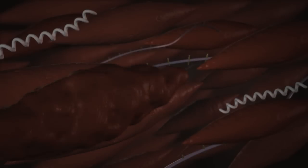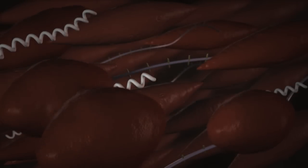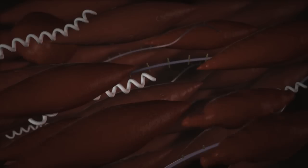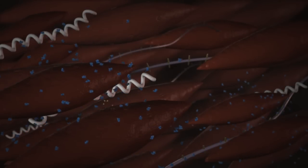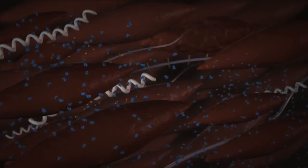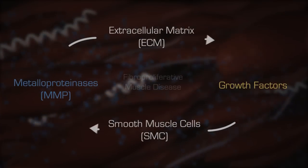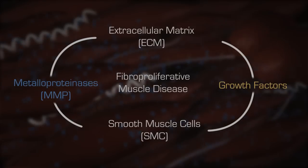The muscle cells begin to grow and proliferate excessively. The new cells also produce more ECM as well as excess MMPs, which create more growth factors and neoepitopes. As a result of this interaction between the ECM and smooth muscle cells, a vicious cycle of fibroproliferative muscle disease is set in motion.